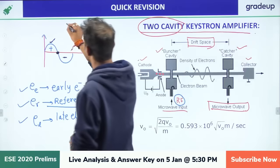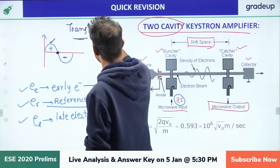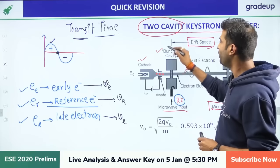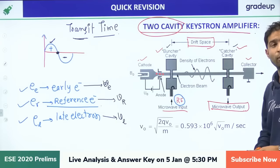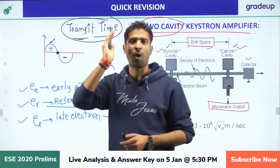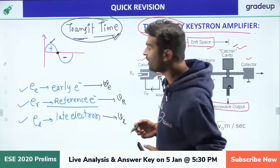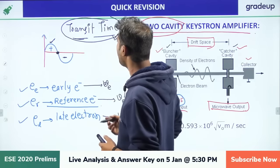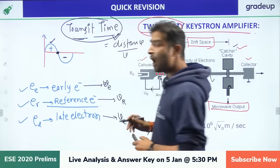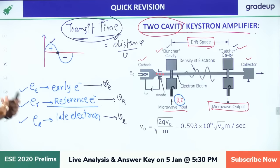The reference electron, when it comes in contact with the RF signal at the zero crossing point, will neither be accelerated nor retarded — it moves at the reference velocity V₀. The early electron, if it comes in contact with the negative part of RF, will be retarded. The late electron moves with slower speed.